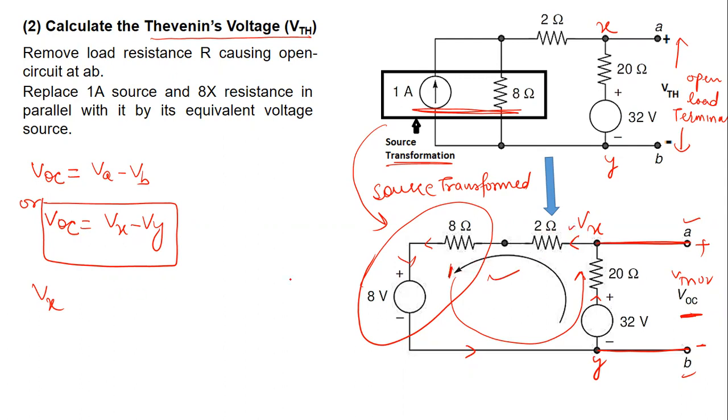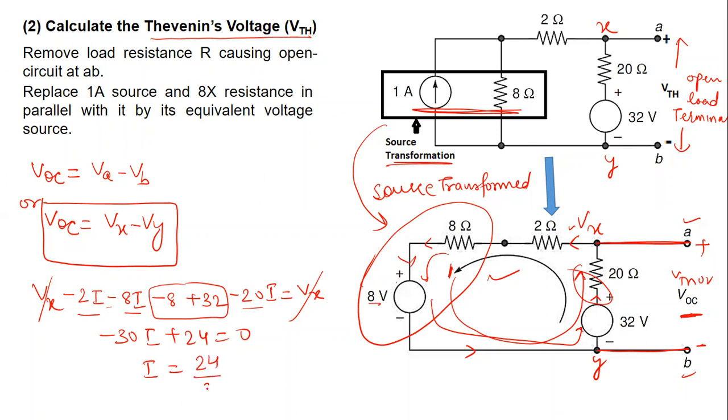These two currents are parallel through 2 ohms, so it is minus 2I. Let us come to 8, it is minus 8I. Let us come to 8V here. Here it is going from positive to negative, so it is minus 8. Then let us come to this 32. It is going from minus to positive, so it is plus 32. Then you have 20. Both are parallel here, so it is minus 20I equals VX. These two are cancelled here. From here, you have 2, 8, 10, which is minus 30I, and then these two parameters, plus 24 equals 0. So I equals 24 by 30 A.